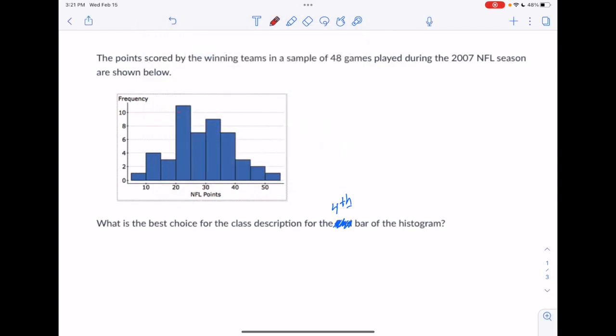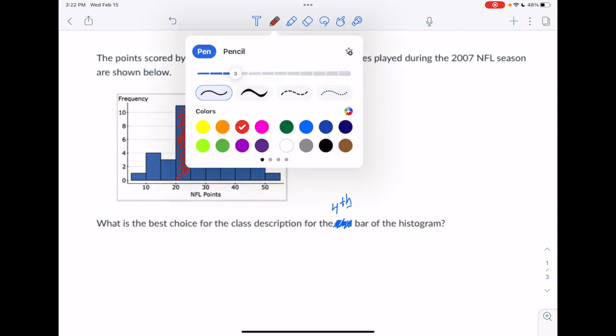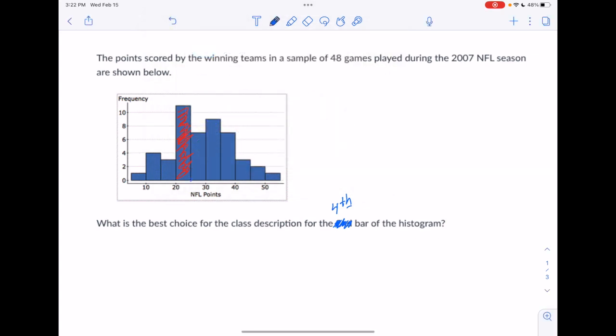So we're looking at this one right here. That's our fourth bar. So that's the one that we're focusing on and it has a left boundary of 20. And the right boundary isn't labeled but it's right in between 20 and 30, so that would be 25.